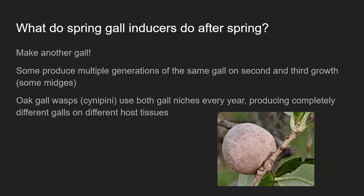The other strategy is to just make a second gall over the summer. We do see this in some midge groups where their hosts have multiple flushes of growth, and they just do the same gall on each flush. There's one on live oak in Florida where we see fresh galls in a burst in the very early spring, and then another flush a month or so later with a second budding out, and maybe even a third in the same year — a multi-generational life cycle.